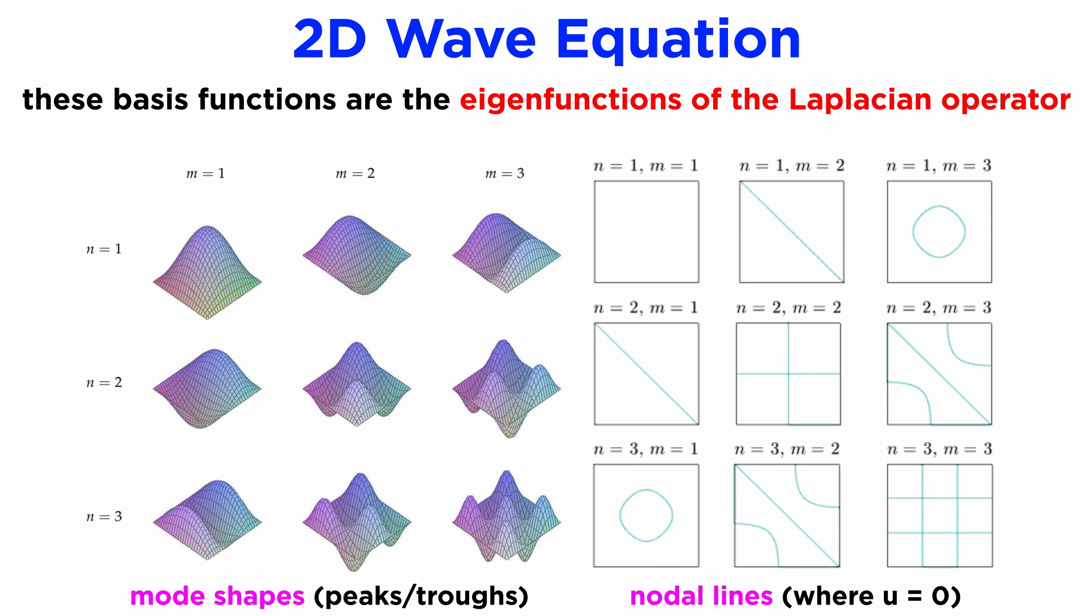A membrane that is displaced will vibrate in all of these mode shapes to varying degrees in a similar fashion to the 1D waves on a string we saw previously.